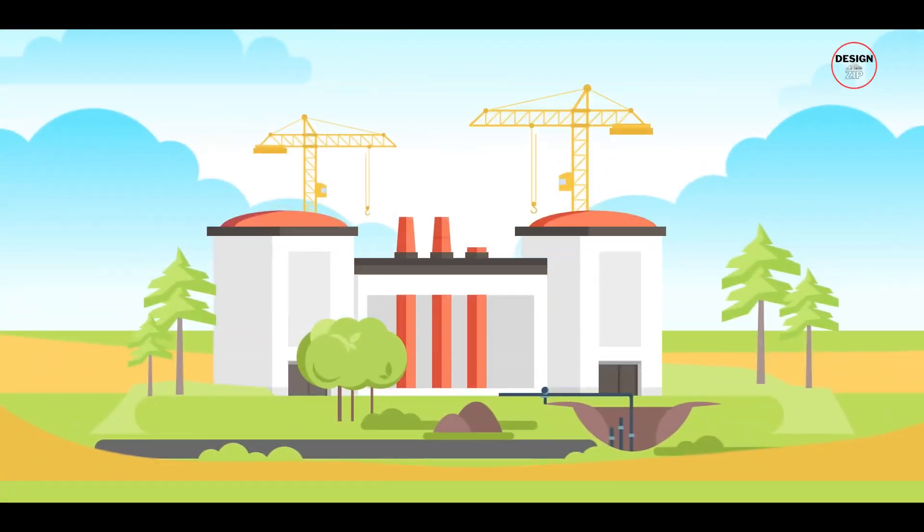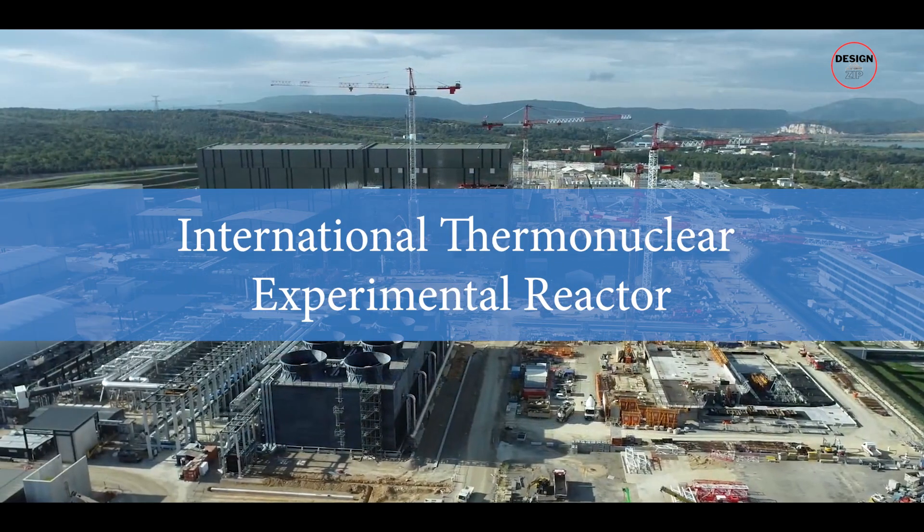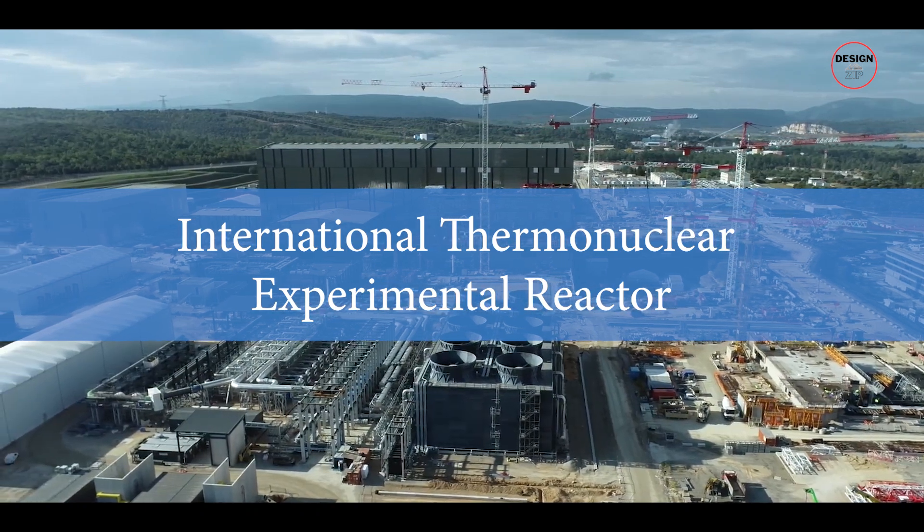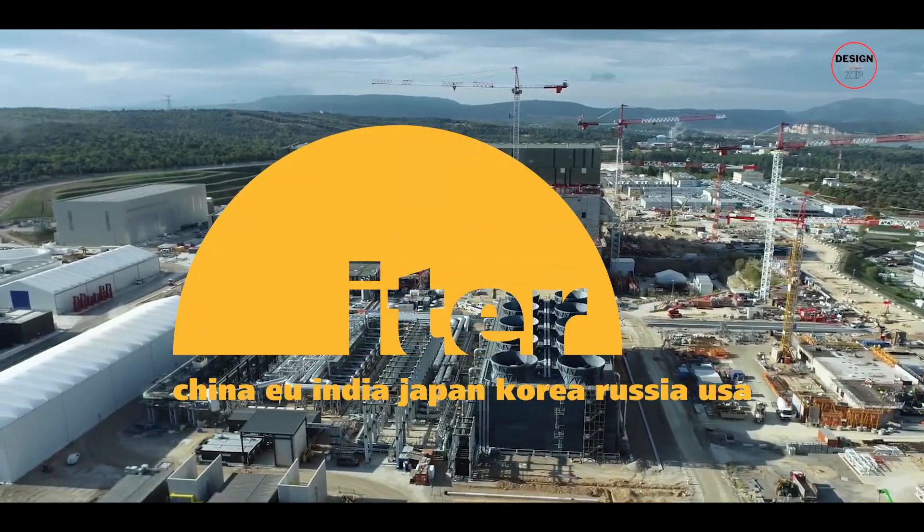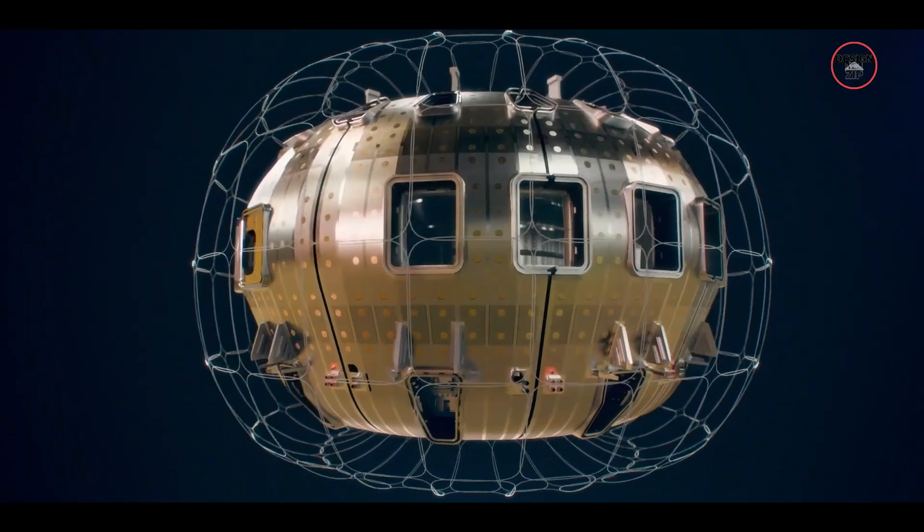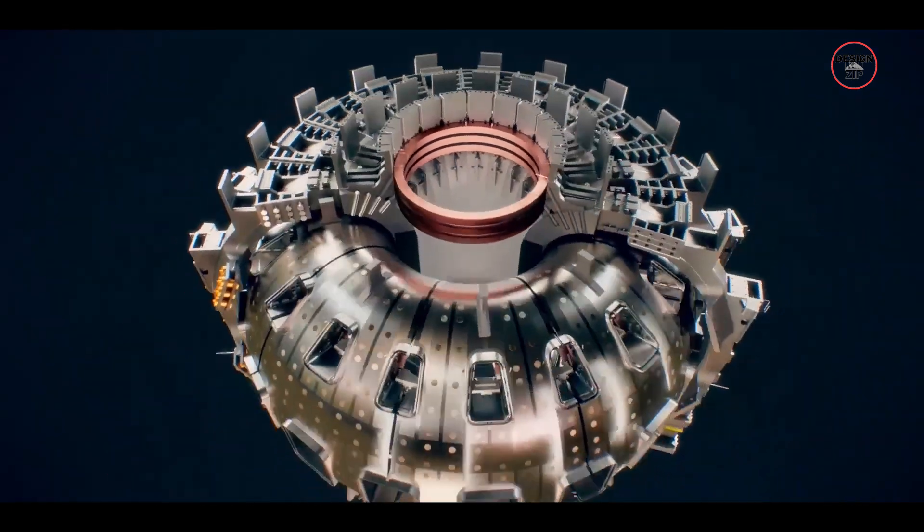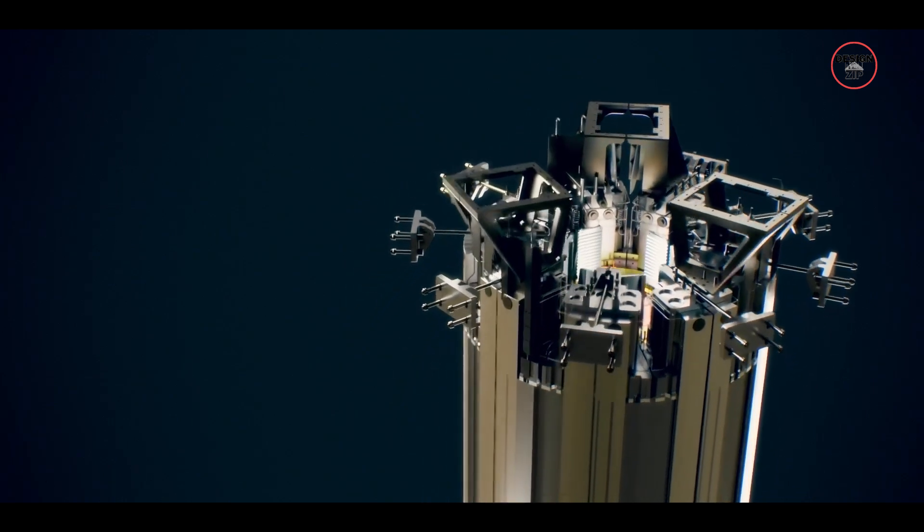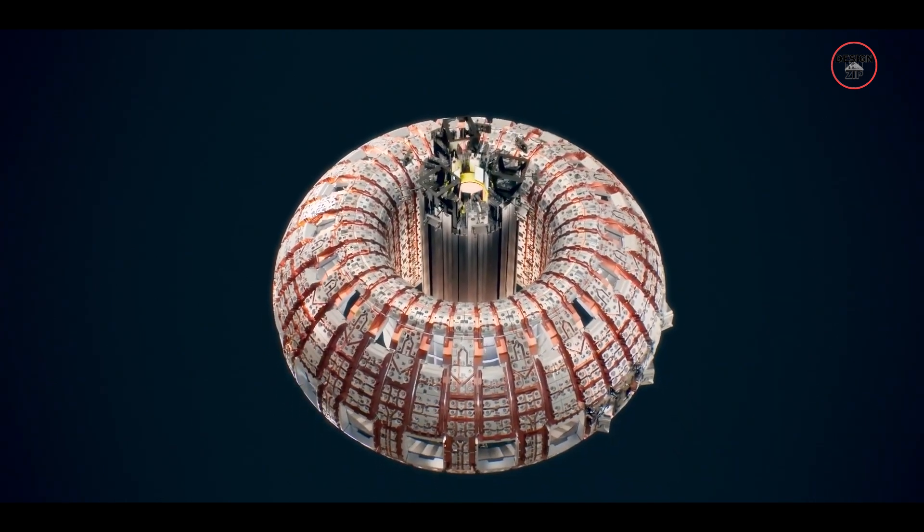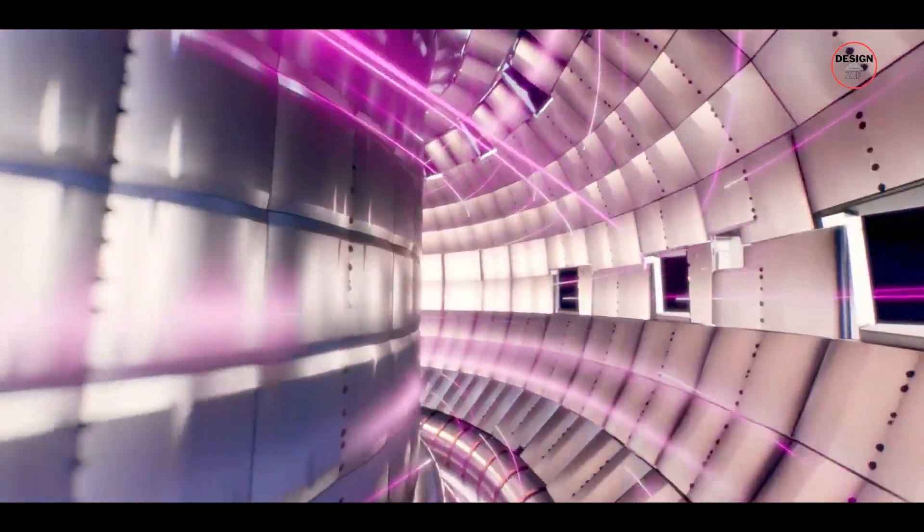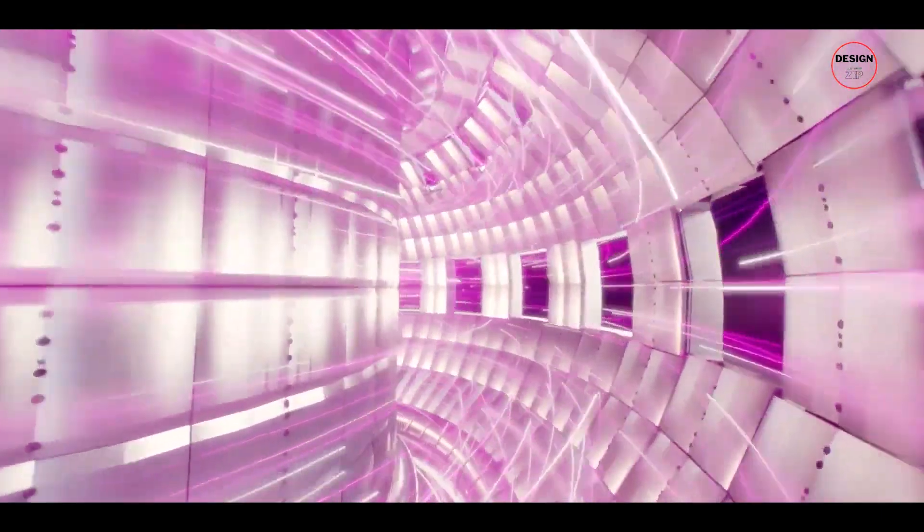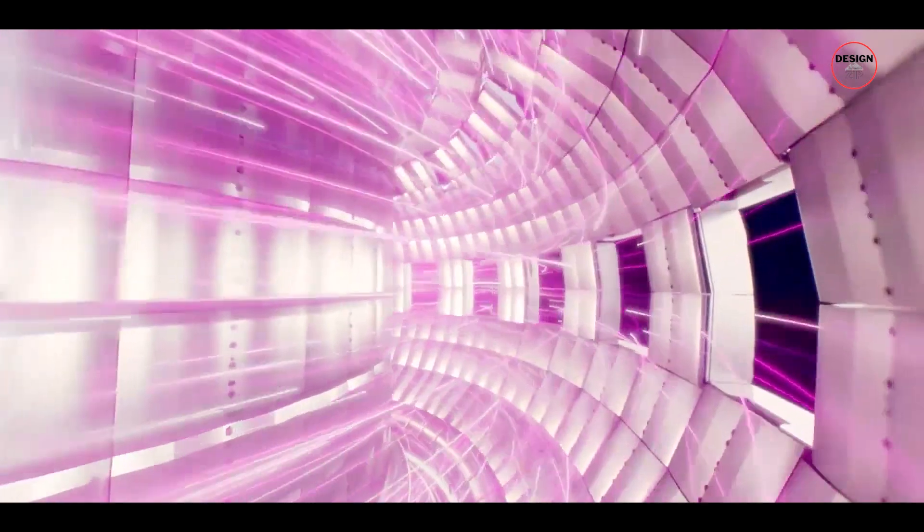So they decided to build a massive nuclear fusion reactor. They named it the International Thermonuclear Experimental Reactor, or ITER for short. This nuclear fusion reactor will use nuclear fusion to create a tremendous amount of energy. It is the opposite of nuclear fission, which is splitting atoms apart and is what our current nuclear power plants use. Fusion is cleaner, safer and could potentially provide limitless energy.